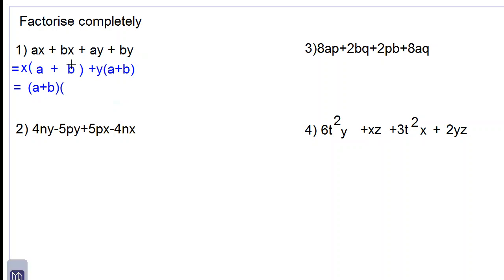And if we factor out a plus b from the first term, we will have x remaining. So we will decide to write x plus y. Since we factored out a plus b, this is the answer for number 1.